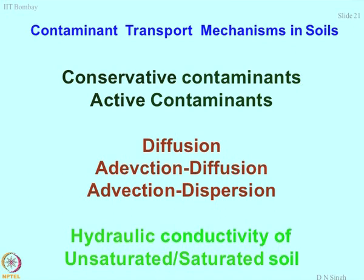A simple example to understand advective-diffusive contaminant transport: your advective transport is what you do in the laboratory right now. Take a soil sample, connect it to the water tap, and find out the hydraulic conductivity — a simple advection process. If you change the concentration of the water passing through the soil, rather than fresh water, pass sodium chloride of a certain concentration. Then see what is the input versus output concentration. You get hydraulic conductivity, but also the salt sorbing capacity of the soil mass.